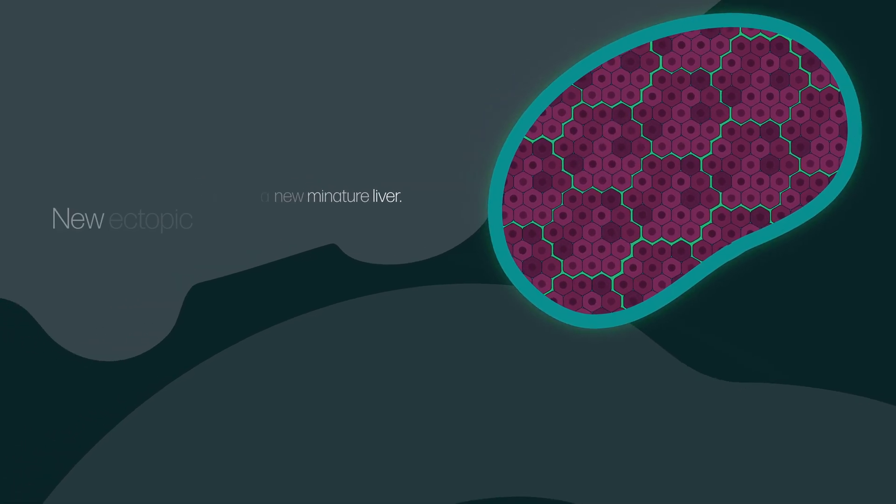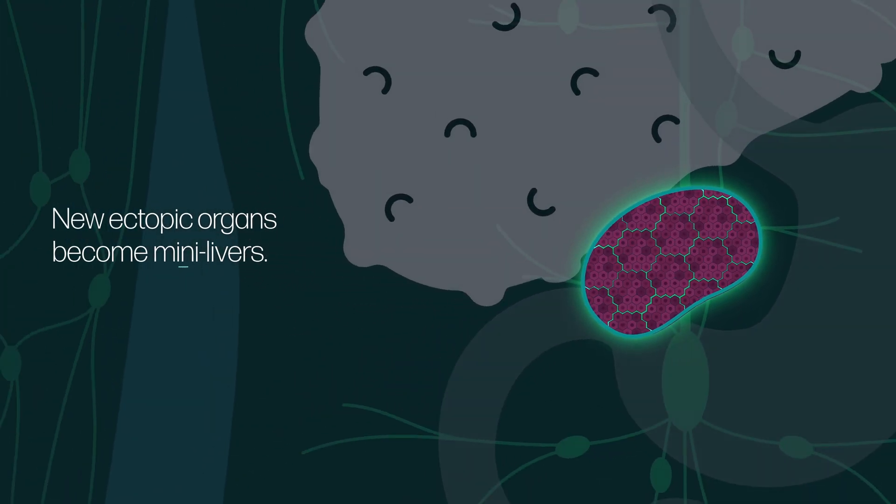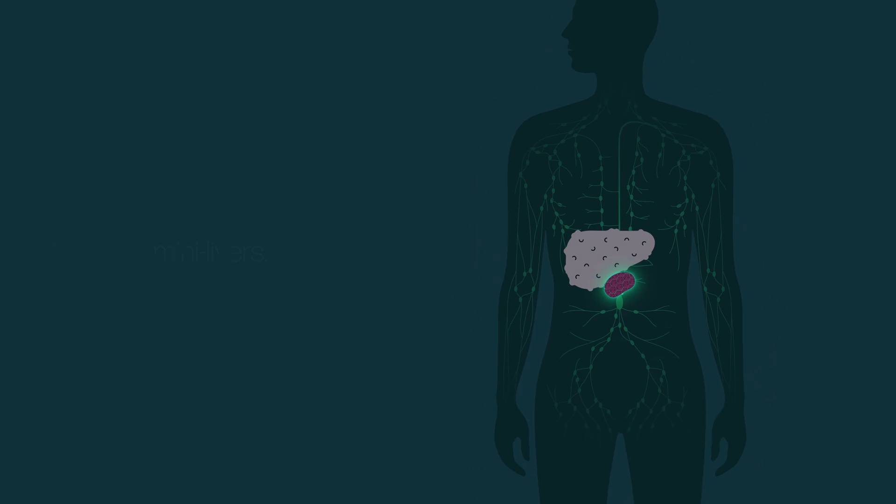The new ectopic organs grown in what started as lymph nodes become mini-livers, receiving and filtering the patient's blood.